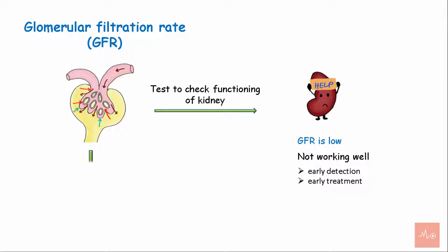GFR is important for determining the stage of chronic kidney disease, which guides major decisions like drug dosing or living organ donation.